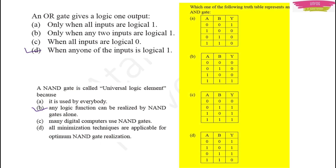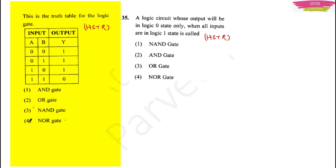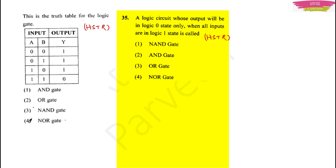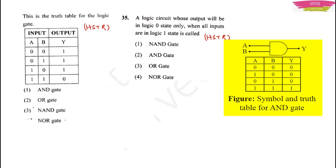The next question: which truth table represents an AND gate? You should know — only when both inputs are high will the output be high. Then, two questions from the HSTR previous year question paper. The first — I will not give the answer; I want you all to give the answer in the comment section. The second: a logic circuit whose output will be logic 0 only when all inputs are logic 1 — that is the NAND gate, because NAND is the complement of AND gate, and NAND output is 0 only when both inputs are 1.